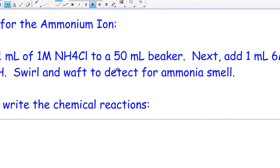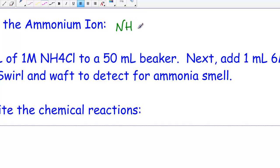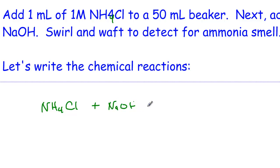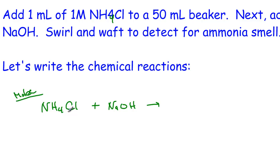Our next equation is testing for the ammonium ion. Ammonium is our positive polyatomic ion, NH4 plus 1. We're going to take NH4Cl into a small beaker — ammonium chloride — drawn from the stock bottle using a pipette. The second reactant is sodium hydroxide, 5 to 7 drops of 6 molar NaOH. The molecular equation starts with ammonium chloride aqueous plus sodium hydroxide aqueous.